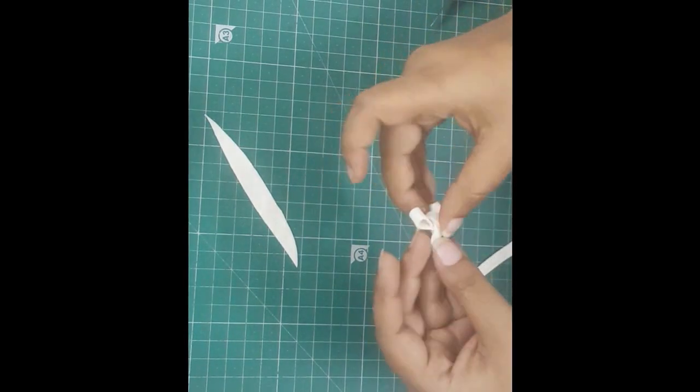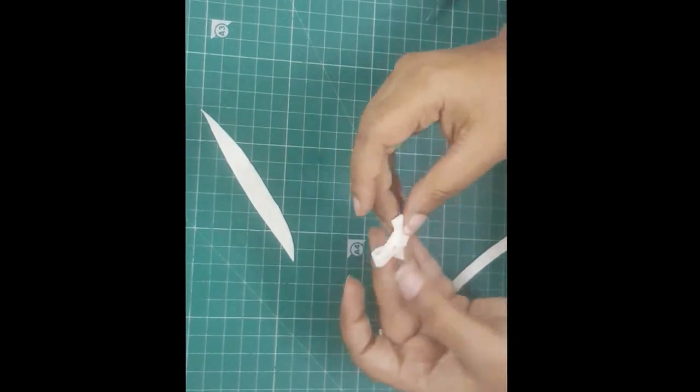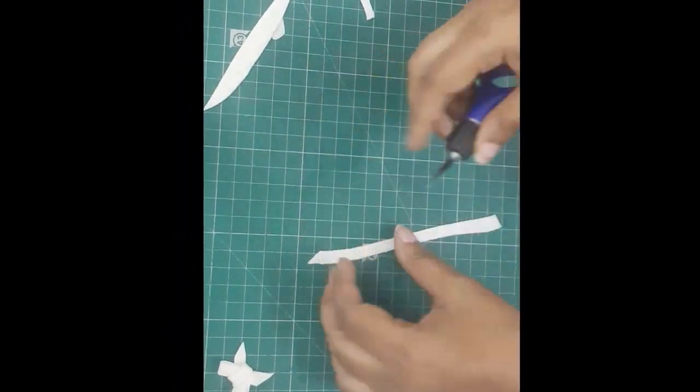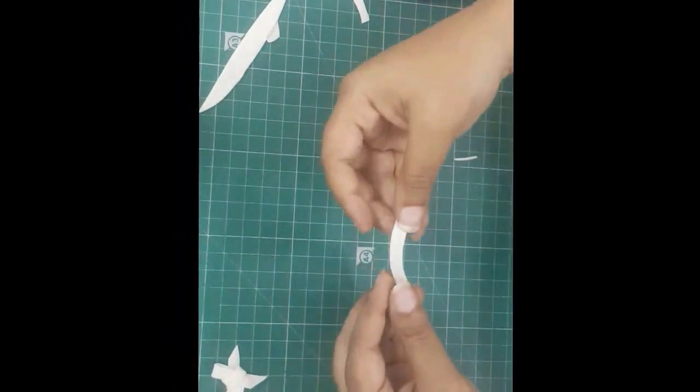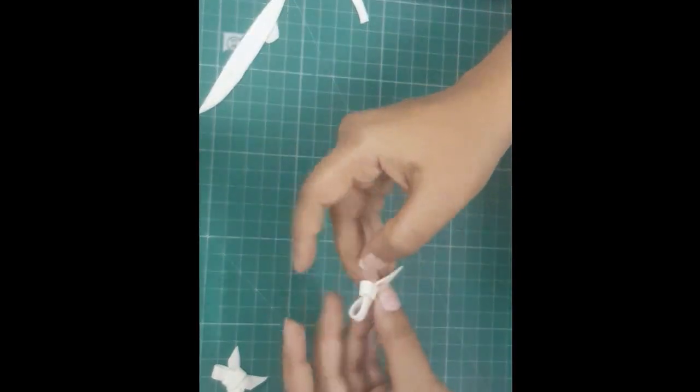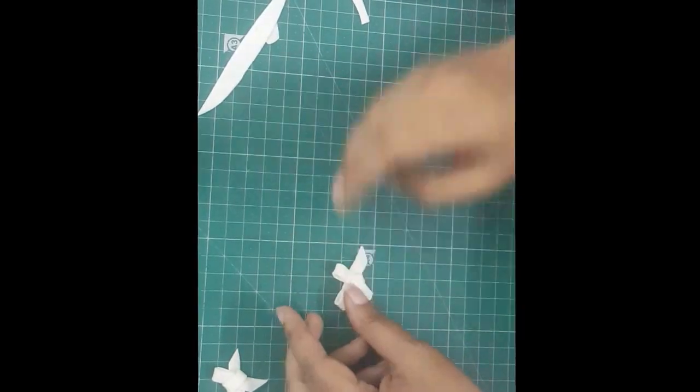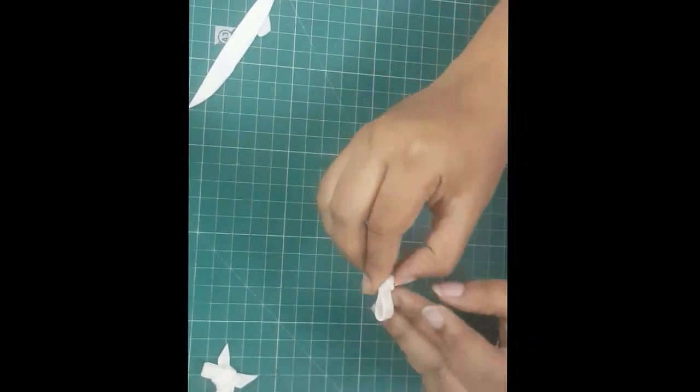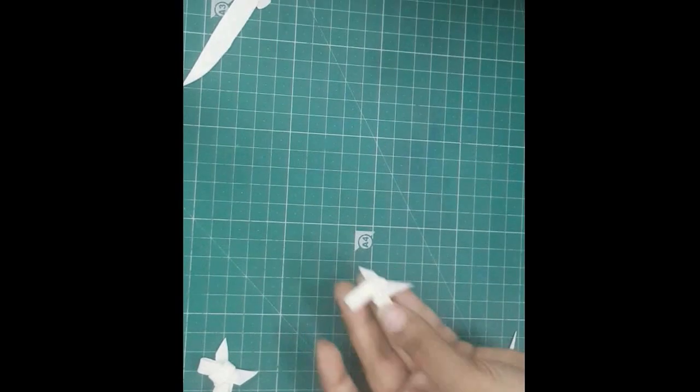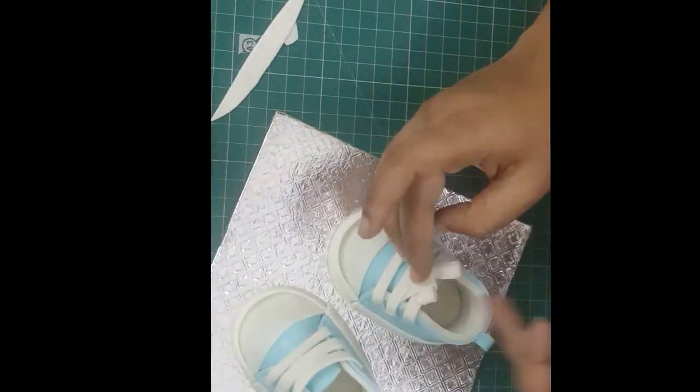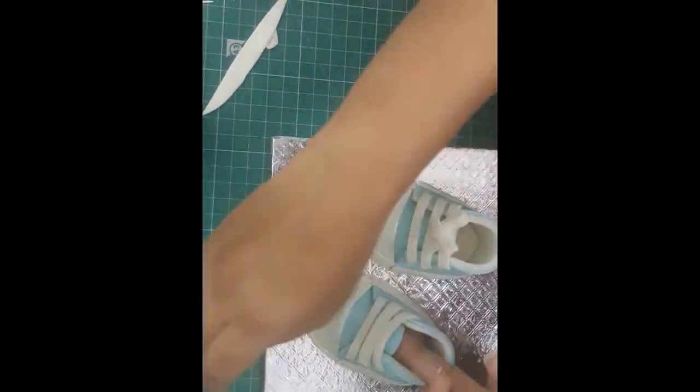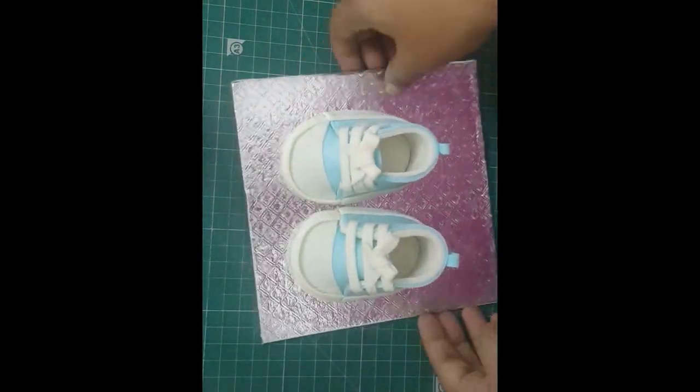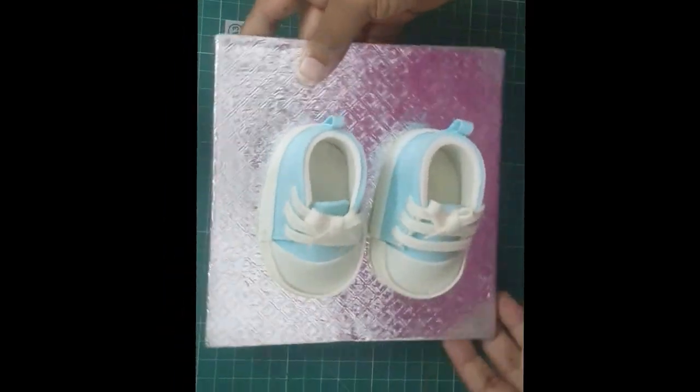Lastly, make two small bows. Stick them onto the shoes. And that's it. These adorable looking baby shoe toppers are ready to go on any kind of cake.